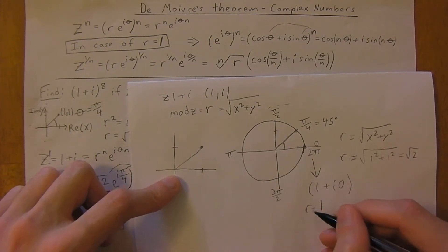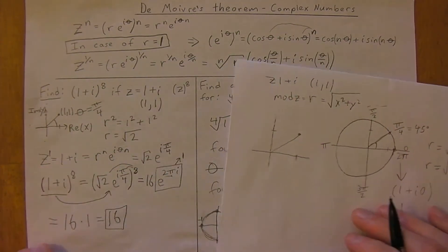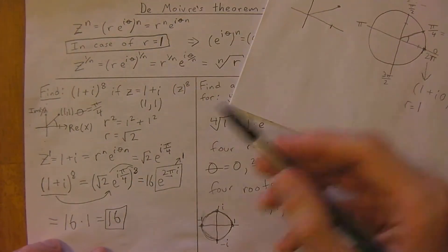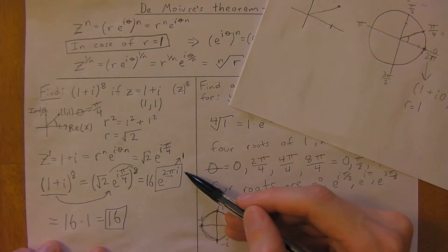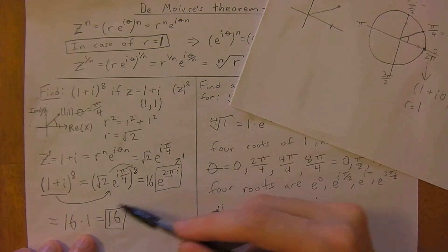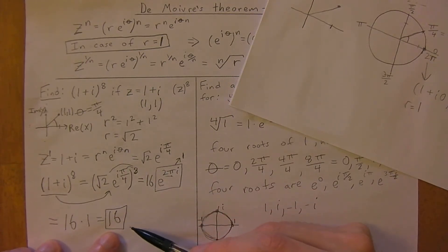It's got a radius of 1, and we know that e to the 2 pi i is 1, so it is 16 times 1. This whole thing finally gets simplified down to 16.